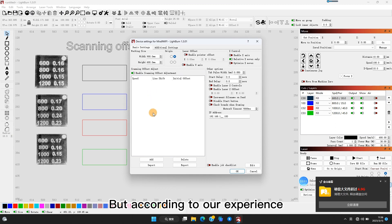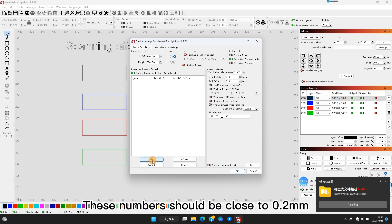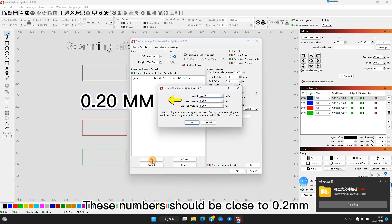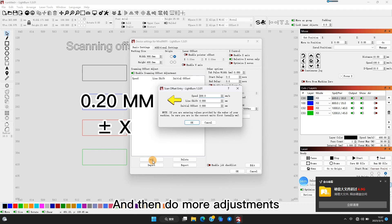But according to our experience, these numbers should be close to 0.2mm. I would suggest you start from applying 0.2 as a reference, and then based on what we get, do more adjustments.